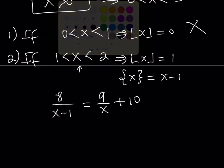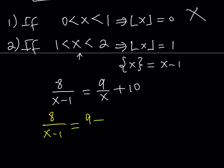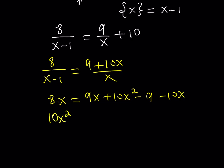To solve 8 over (x minus 1) equals 9 over x plus 10, note x cannot be 0 or 1. Making a common denominator: 8 over (x minus 1) equals (9 plus 10x) divided by x. Cross-multiplying gives 8x equals 9x plus 10x squared minus 9 minus 10x. Rearranging, we get 10x squared minus 9x minus 9 equals 0.